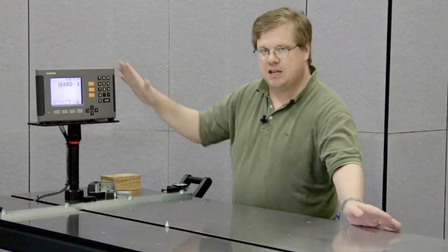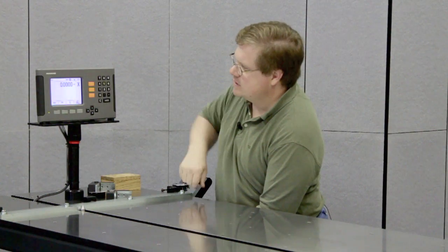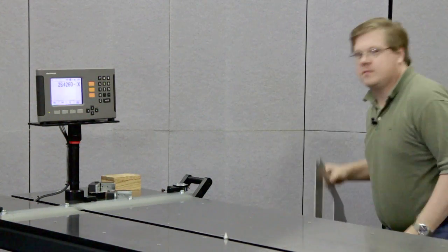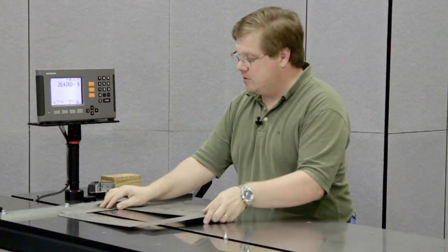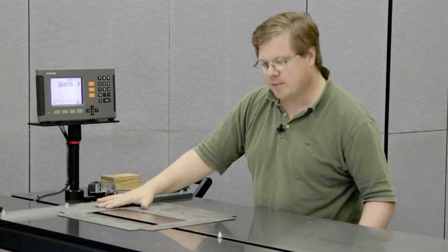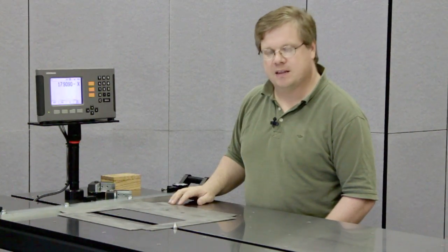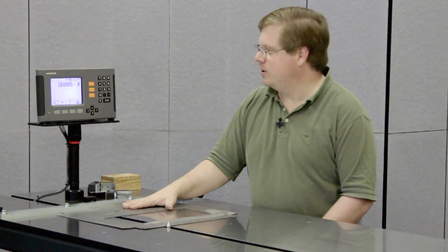To use the machine, this readout, bring the probe up, zero out the display. Then you can take your sheet metal piece, place it up against your stop bar, bring the probe up, and the display will show you the length of the part. You can turn it and check the width of the part.